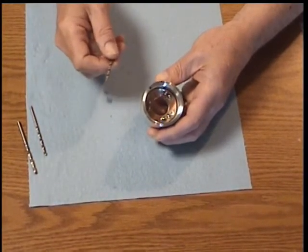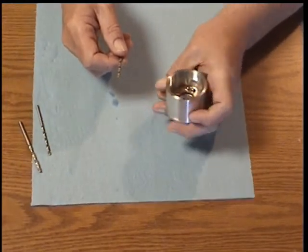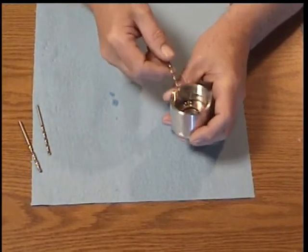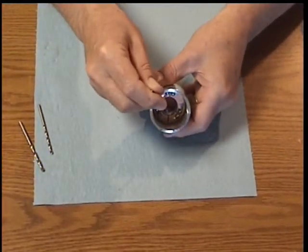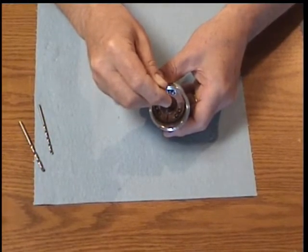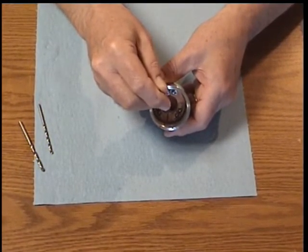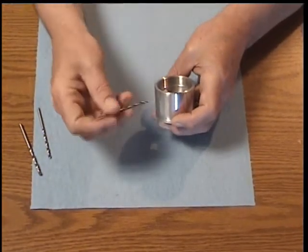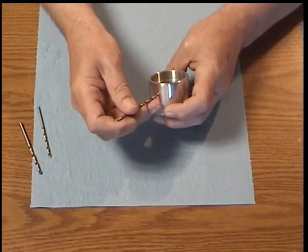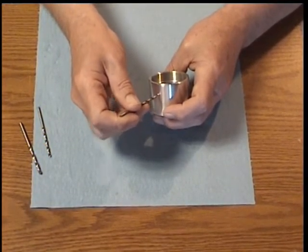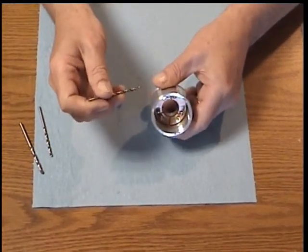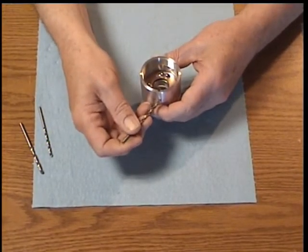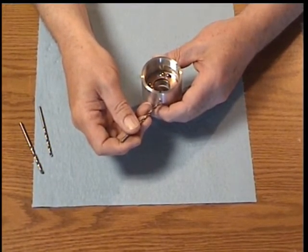I guess the best way to describe it is if you were to hold, looking into the probe body at that slot and calling the slot 12 o'clock, at the one o'clock position you want to drill the smaller hole, the number 31, and at the eleven o'clock position you want to drill the larger hole, the number 29.